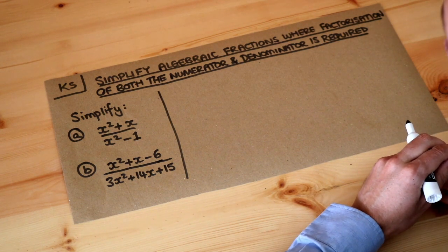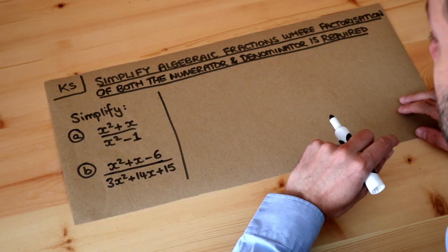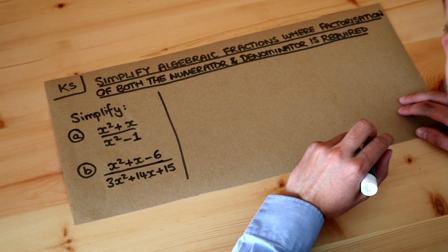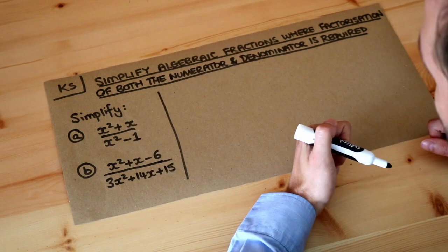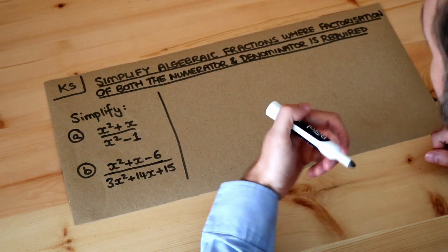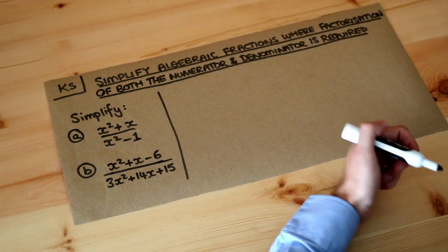Now we saw in the previous video that basically if we want to simplify an algebraic fraction like this, we factorize the top and bottom first, and then we see what cancels top and bottom. What can we divide top and bottom of the fraction by, just like we would simplify a normal fraction like 6 ninths by dividing top and bottom by 3.